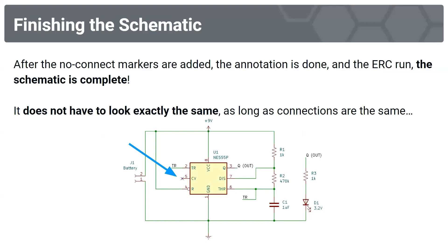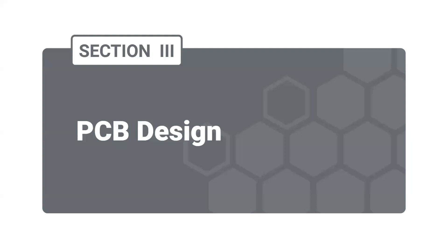After the no-connect markers are added, annotation is done, and the ERC is run, the schematic is complete. It doesn't have to look exactly the same as long as the connections are the same.